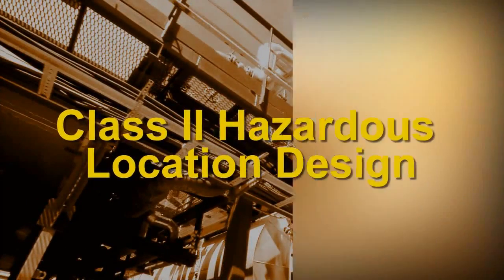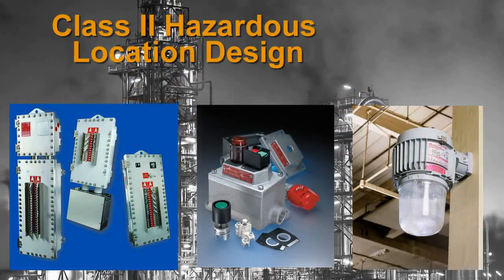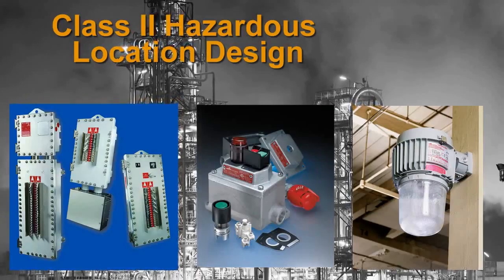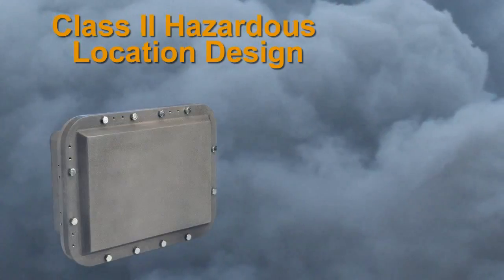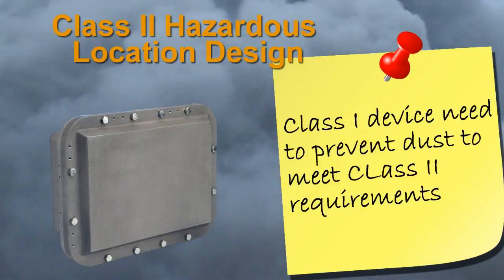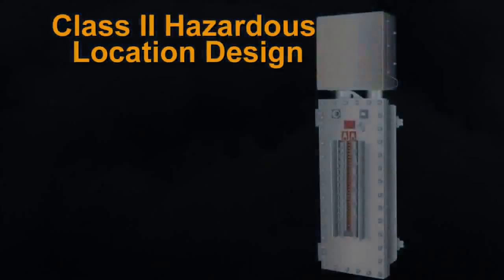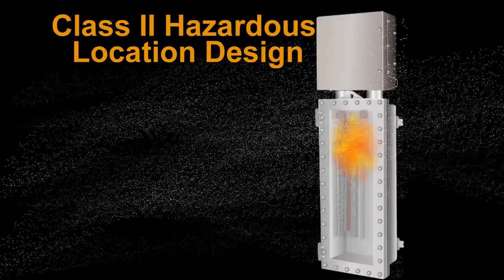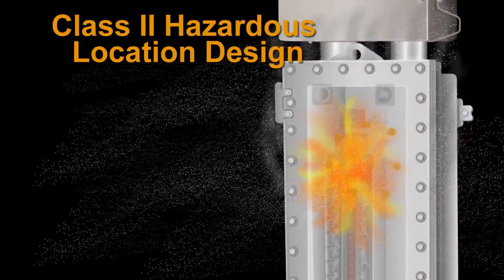There are many enclosures, devices, and fixtures suitable for all three classes, meaning they meet the specifications for each individual type. A Class I device which could contain an explosion of a specific gas would also have to prevent dust from entering the enclosure to be suitable for Class II. The close tolerance of the flame path, which cools the burning gases, is also close enough to exclude explosive dust so that a gasket would not be needed.